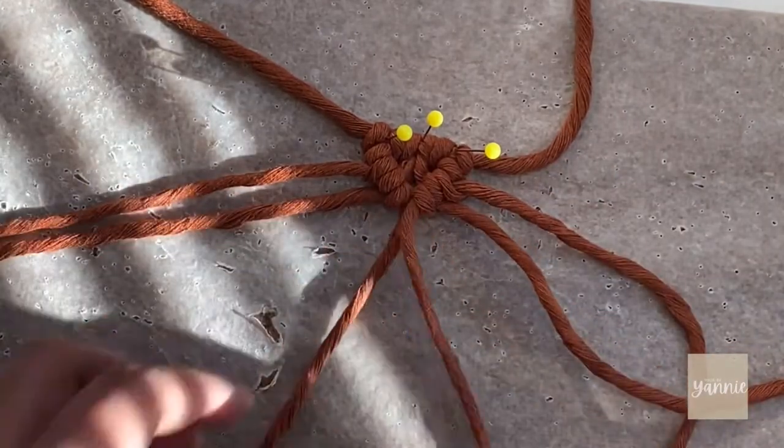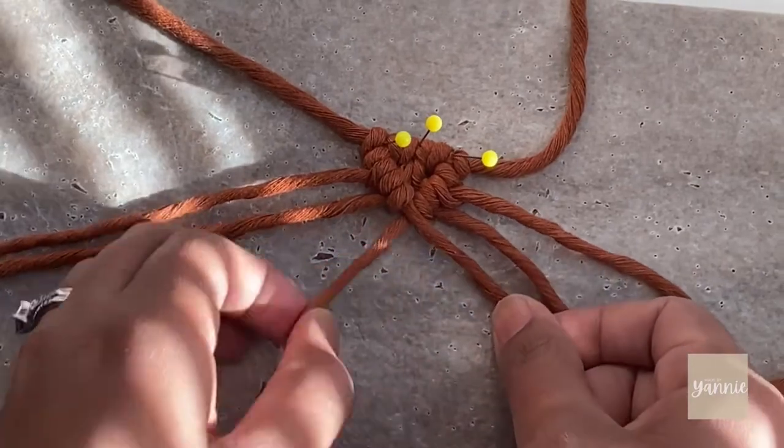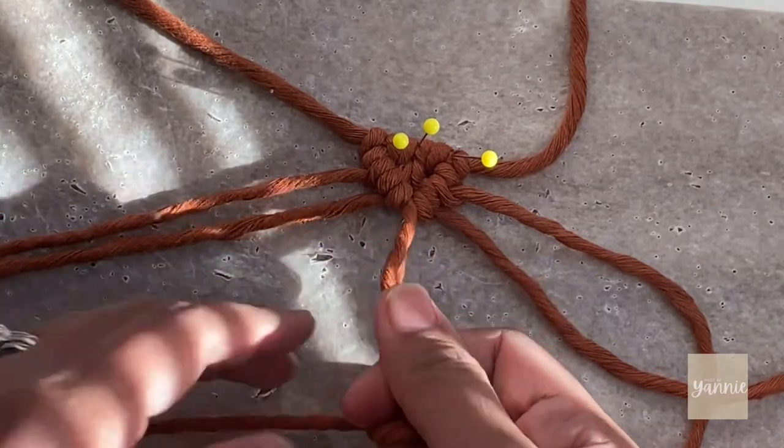Now grab the two supporting cords and bring the other one on top of the other like so. Tie double half-hitch knots to close it.